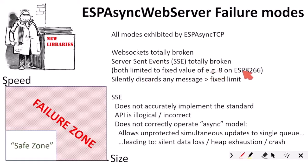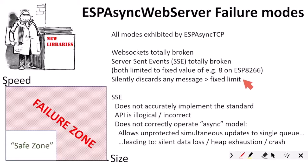Both WebSockets and SSE are limited to a fixed value of eight — for example on an ESP 8266 — which makes them totally useless and impractical for any real-world application that wants dynamic UI updates. They silently discard any message over that limit of eight, with no warning, no error, nothing. When you look into the code, what's quite ironic and ultimately depressing is that this limit was put there to try to prevent those problems. It's just a sticking plaster — a very poor one — over basically a gaping wound.